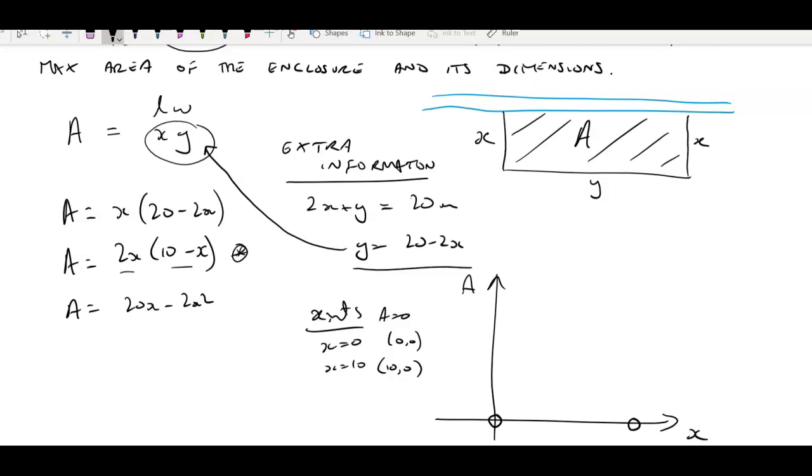It's an upside down parabola, so it goes like that. I'm going to put open circles at those endpoints because you can't really have a side length of 0 or 10. If you did that you wouldn't have an enclosure.